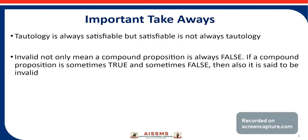Here are some takeaways from this lecture. First: tautology is always satisfiable, because satisfiable means its truth table contains at least one true value, so tautology is always satisfiable. But satisfiable is not always a tautology, because tautology contains all true values. Next: invalid does not only mean a compound proposition is always false — if a compound proposition is sometimes true and sometimes false, then it is also said to be invalid.